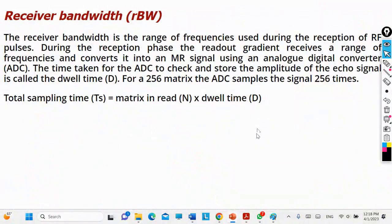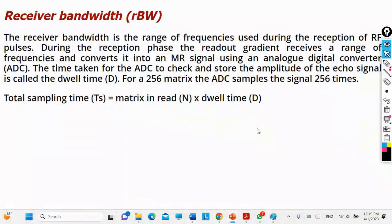There is also something called receiver bandwidth. The signals that will be received have a specific recording time — the machine takes time to receive the signal. For example, if someone is speaking very quickly, you can hear them but cannot understand them because your ability to capture the information is overwhelmed. If they speak slowly, you can distinguish the words clearly.